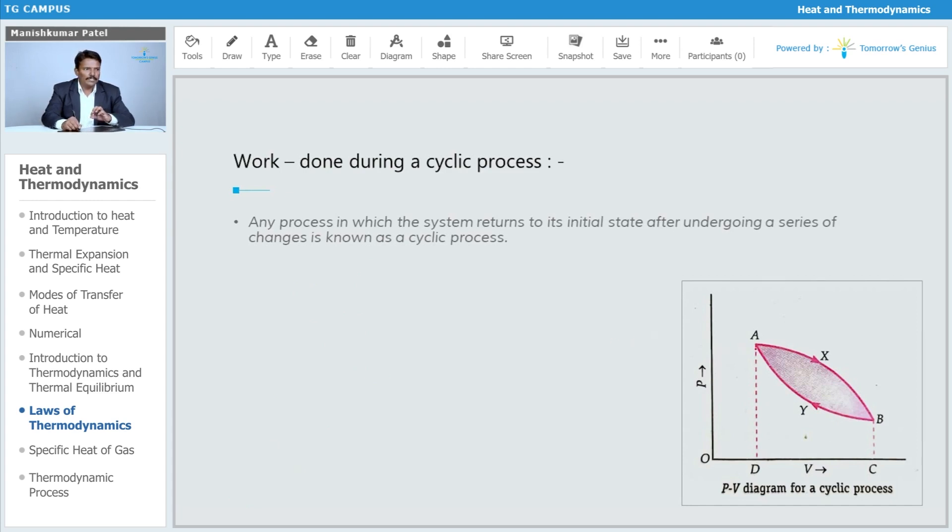Let us say initially the state is A, then it moves to B through the path X, and again it gets back to A through the path Y. When it moves from A to B, this is the area under the curve.